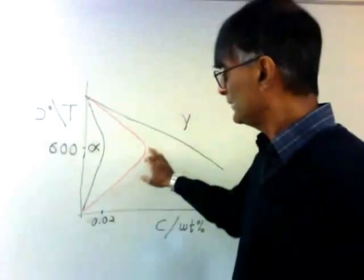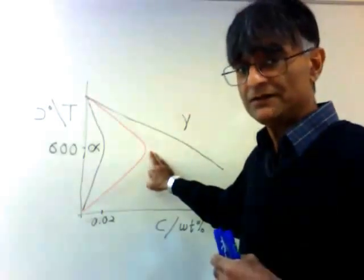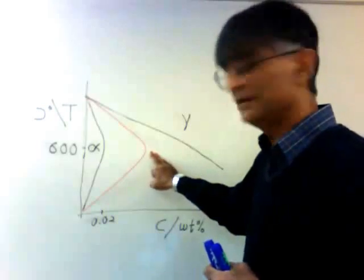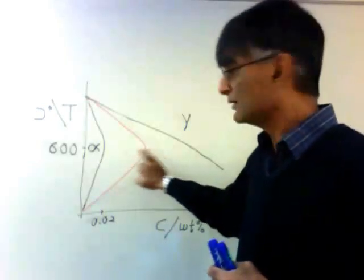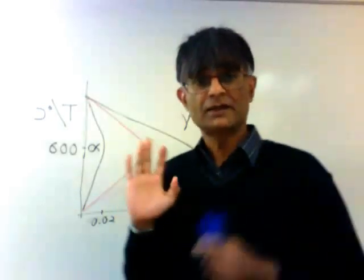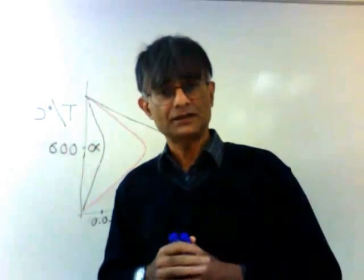Now, of course, if the bainitic ferrite is tetragonal and the solubility is much greater than what we imagined it to be, then the results are completely consistent.